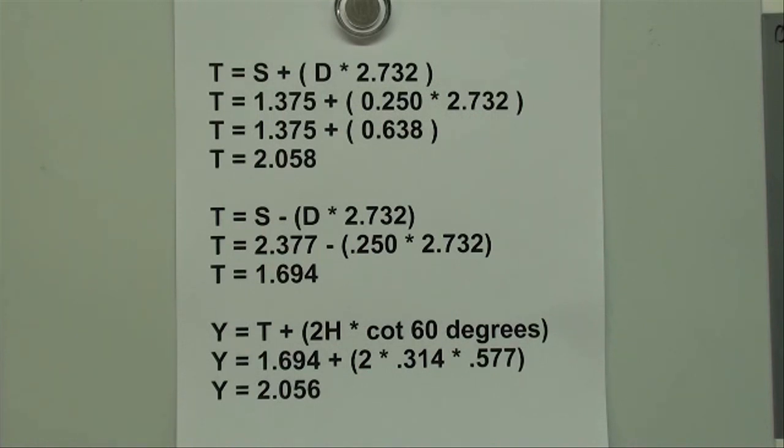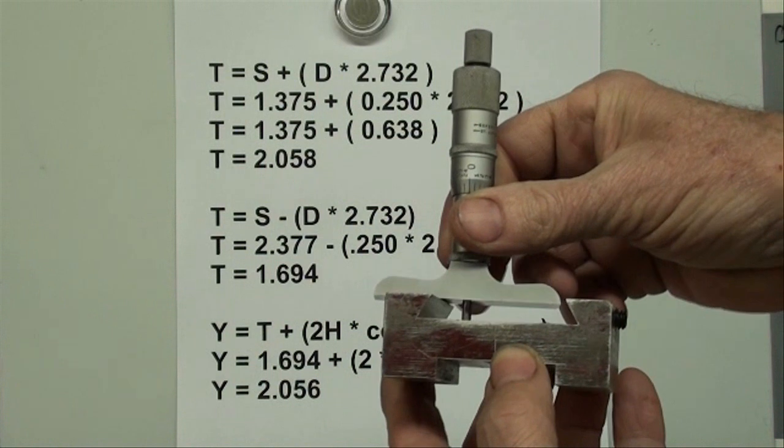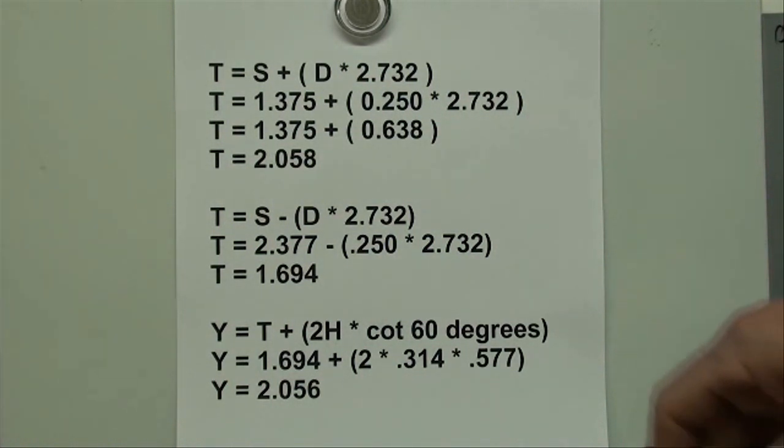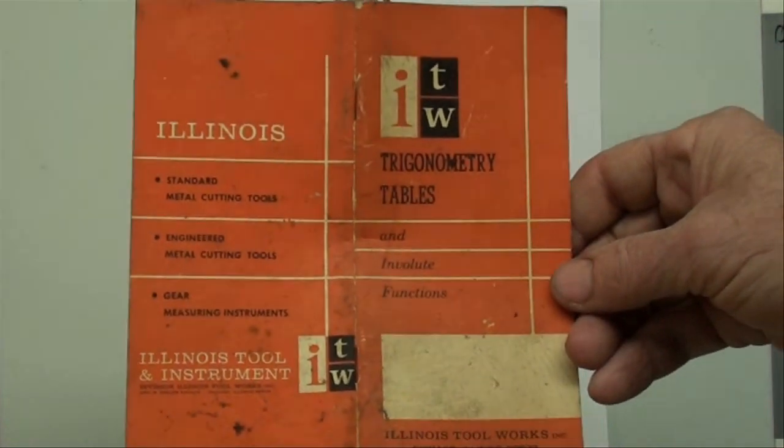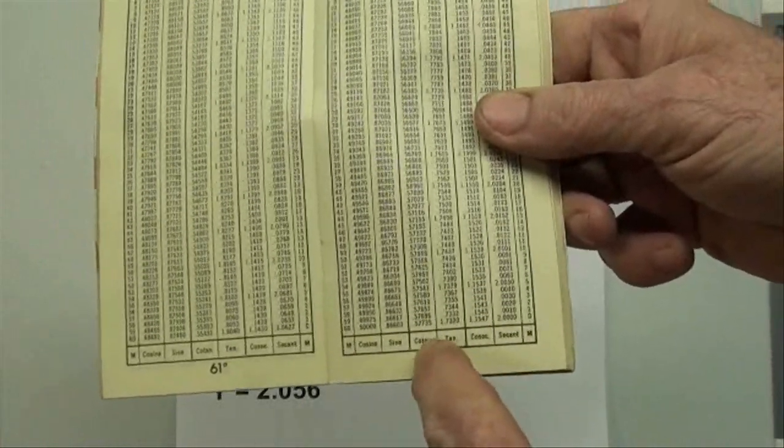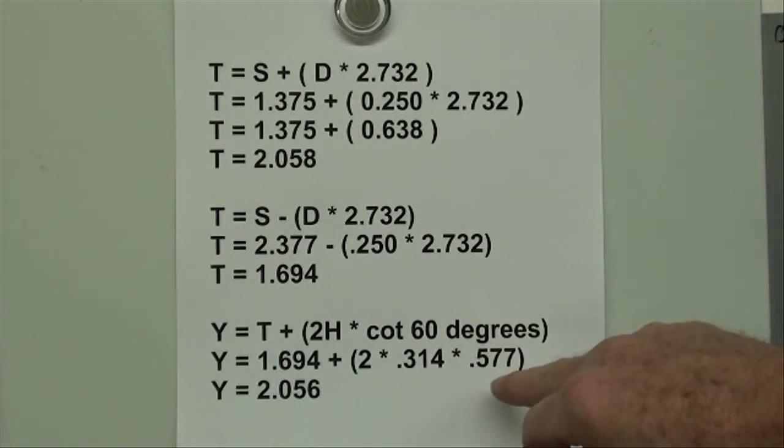In order to find T, it's S minus the diameter times that constant. Do the math and we end up with T equaling 1.694. That 1.694 is needed in the next formula to find Y. Here we use Y equals T plus 2H times cotangent of 60 degrees. We've got to find H, which is this dimension here. Using your depth mic, check the depth right here, and the depth is 0.314. We also need to find the cotangent of 60 degrees.